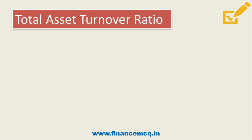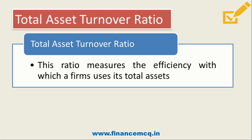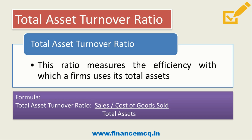The total asset turnover ratio measures the efficiency with which a firm uses its total assets — that is, how effectively the firm utilizes its total assets. The formula to calculate this ratio is sales upon total assets, or cost of goods sold upon total assets, whichever is given in the question. Wherever turnover is involved, it relates to sales or cost of goods sold.